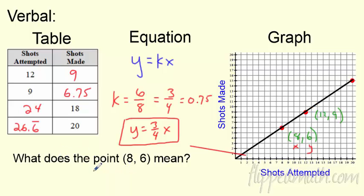Okay, so what does the point 8, 6 mean in this? Well, 8 and 6, just label them. It means if you have 8 attempts, what happens in 8 attempts? Well, you're going to make 6 shots. You will make 6 shots. So I may have you label. We did that way back in Chapter 1. Awesome.